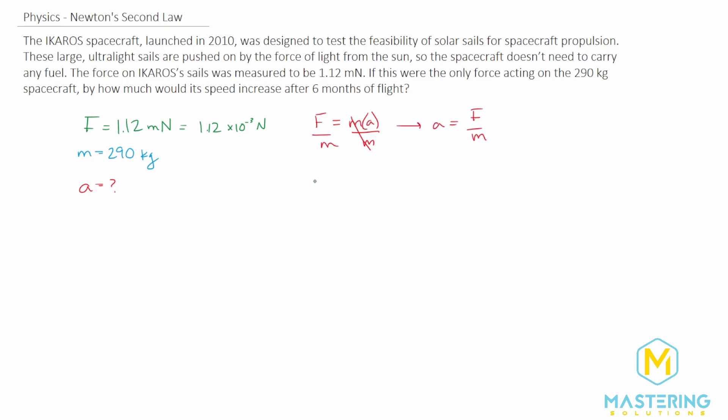The acceleration formula is equal to the change in velocity over a change in time, but we want to solve for the velocity here, so we'll multiply both sides by time. Now we have the velocity is equal to the acceleration times the change in time.